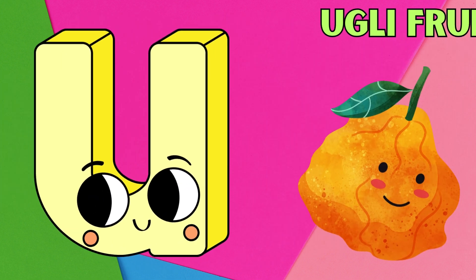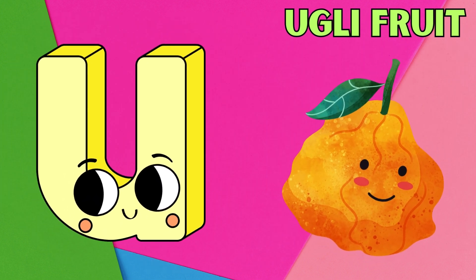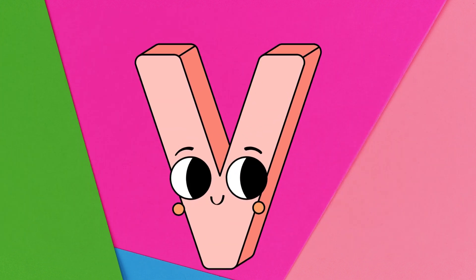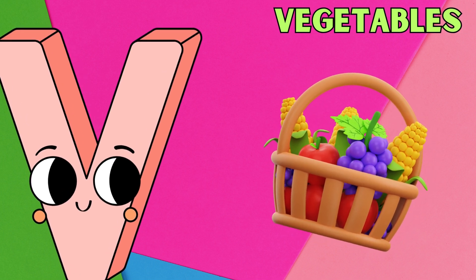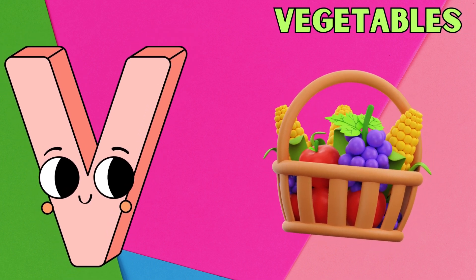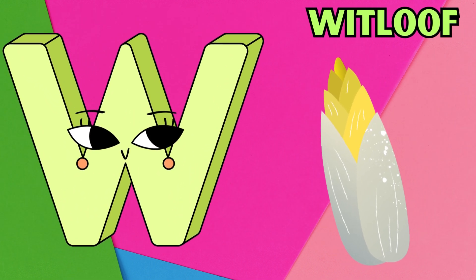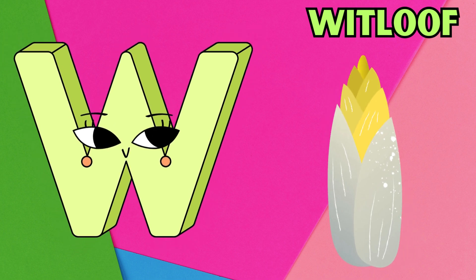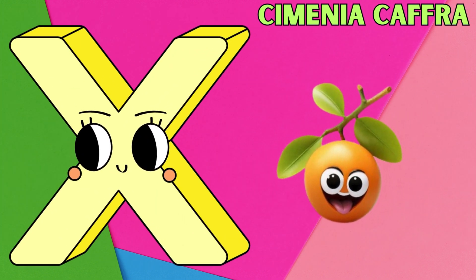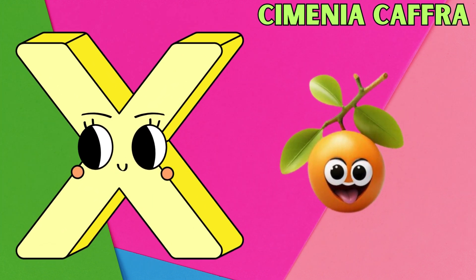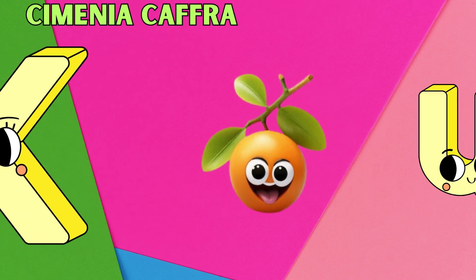U is for ugly fruit, uh, ugly fruit. V is for vegetables, v, vegetables. W is for whitloaf, w, whitloaf. X is for zymenia calf, z, zymenia calf.